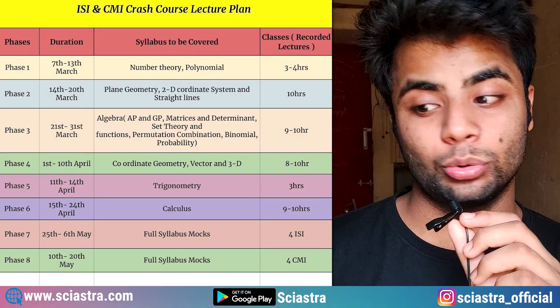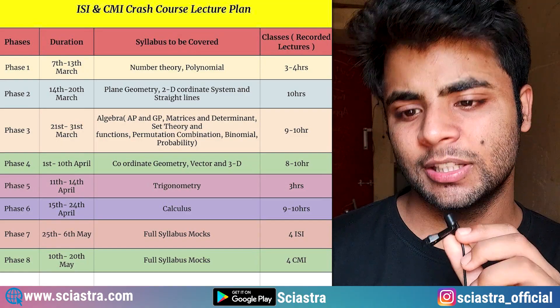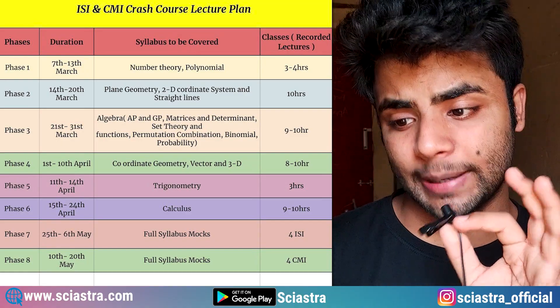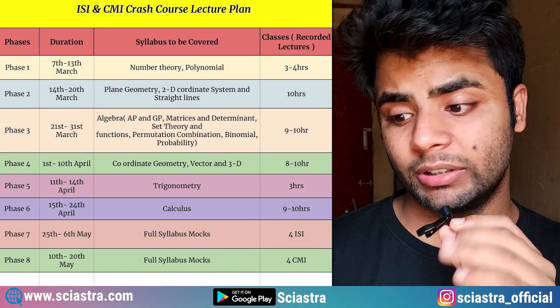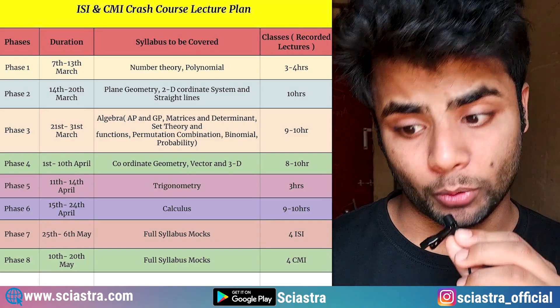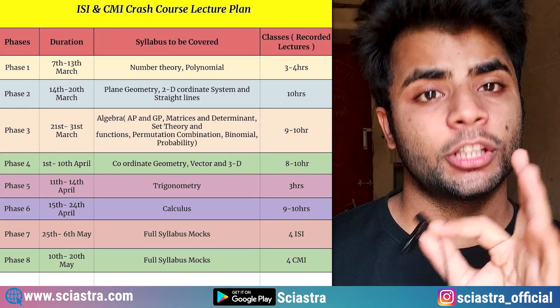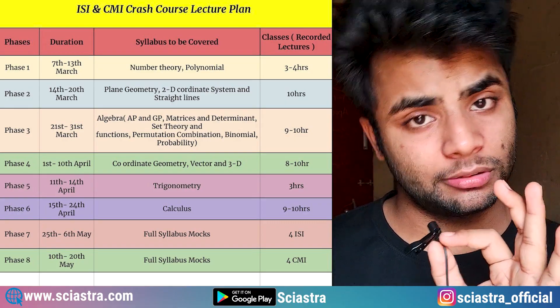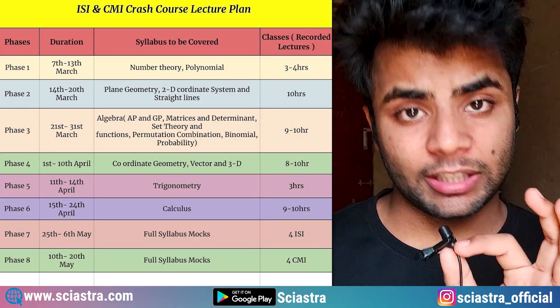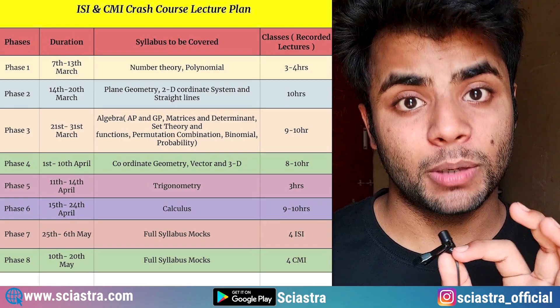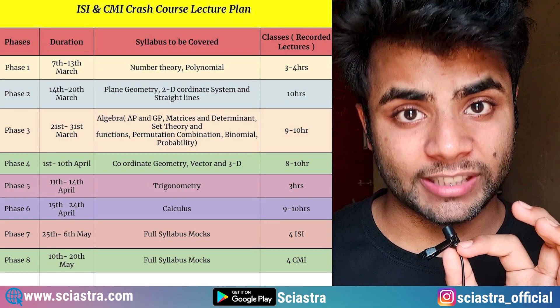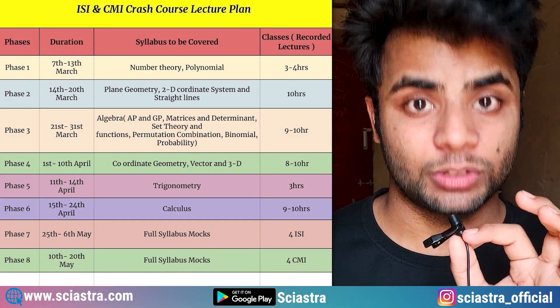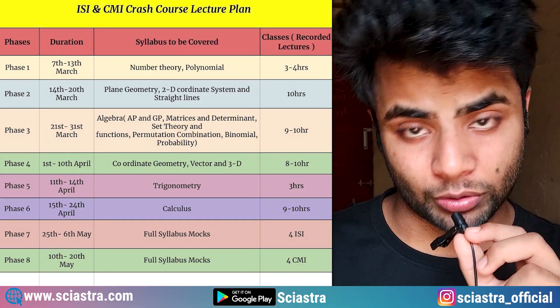Phase 1 is 7th to 13th of March. The chapters we are going to cover are Number Theory and Polynomial — 3 to 4 hours of recorded lecture. We are also going to give you mock tests and PYQs, which I am going to share with you now.